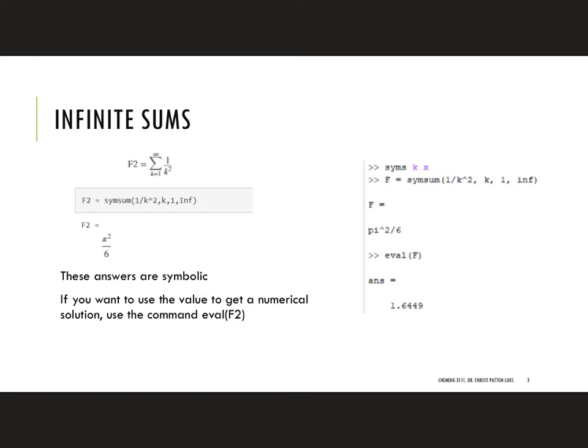The next example they do in the MathWorks page is the sum from 1 to infinity of 1 over K squared. In this case we already have this open so you don't really need to redefine your symbols unless you haven't typed that part in yet. Again we're still using the symbols K and we can use X. So F2 is symsum 1 over K carat 2 comma K.